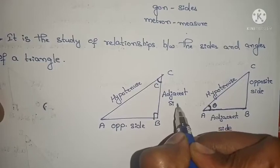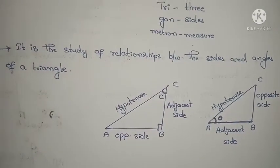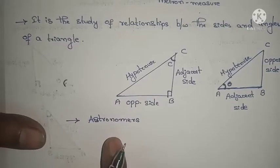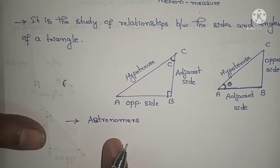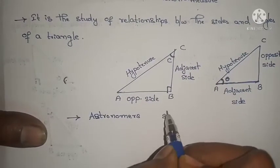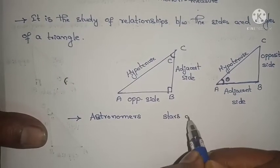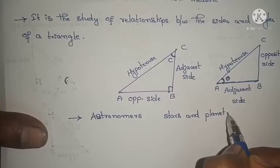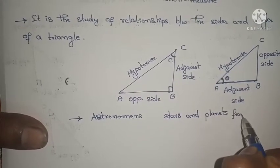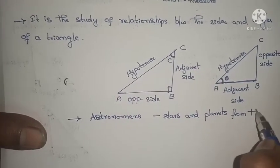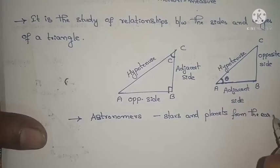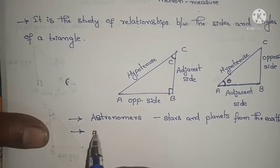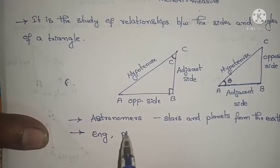Did you understand the differences? This angle is touching this side, so this side is called the adjacent side. Trigonometry is used by astronomers to study the distances between stars and planets from the earth. Not only by astronomers, it was also used in different fields of engineering and physical studies.